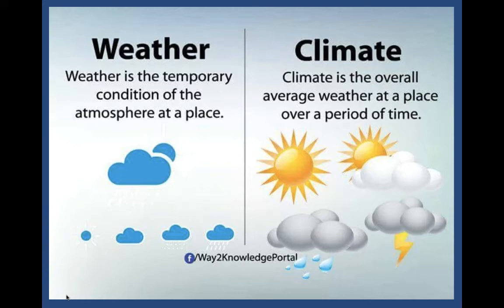That period of time is typically somewhere between 20 and 30 years. When you hear a weather person say the average high today is normally this and we're either above or below normal, that's because of data that has been taken over a large number of years, as well as things like regular natural disasters. Is it a hurricane place? Is it an earthquake place? All of those things go into climate, whereas weather, again, is what's going on right now.